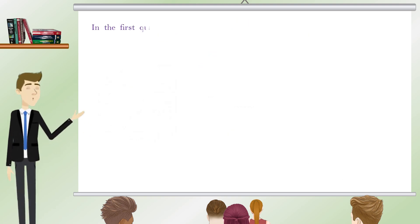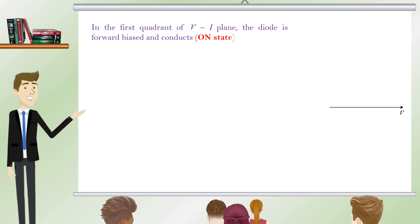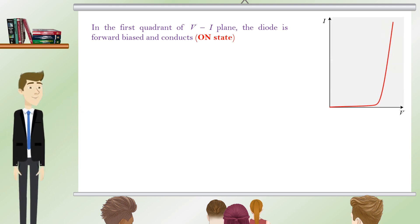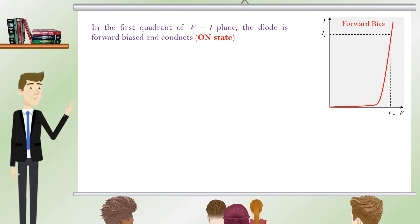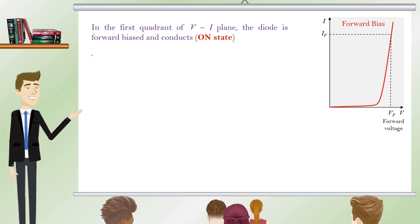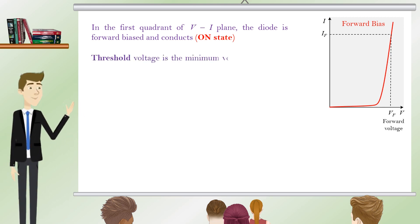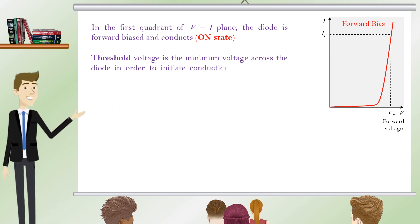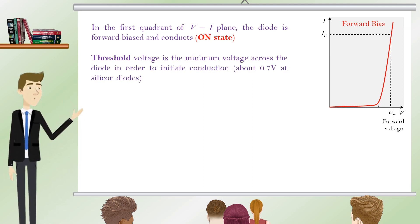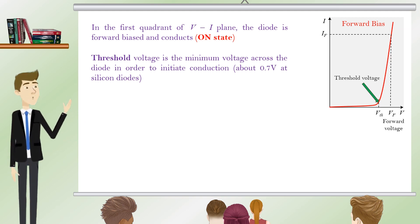In the first quadrant of the VI plane, the diode is forward biased and conducts in the on state. Depending on the value of the current IF, a very small voltage VF is developed across the diode terminals, known as the forward voltage. The threshold voltage is the minimum voltage across the diode required to initiate conduction — about 0.7 volts in silicon diodes.